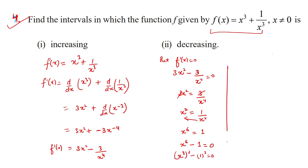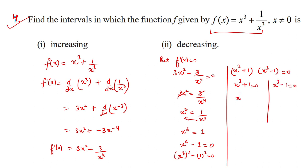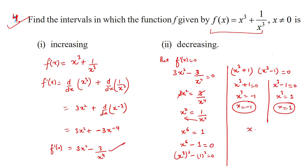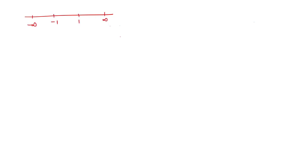From (x³ + 1)(x³ − 1) = 0: either x³ = −1, giving x = −1, or x³ = 1, giving x = 1. So the critical values are x = −1 and x = 1. Plotting on the number line gives three intervals: (−∞, −1), (−1, 1), and (1, ∞). We can simplify f'(x) as 3(x⁶ − 1)/x⁴ for easier checking.